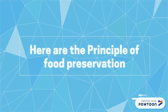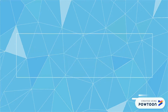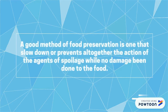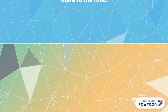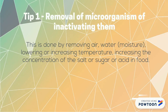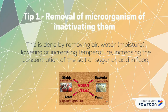Here are the principles of food preservation. A good method of food preservation is one that slows down or prevents altogether the action of the agents of spoilage, while no damage is being done to the food. Tip 1: removal of microorganisms or inactivating them.